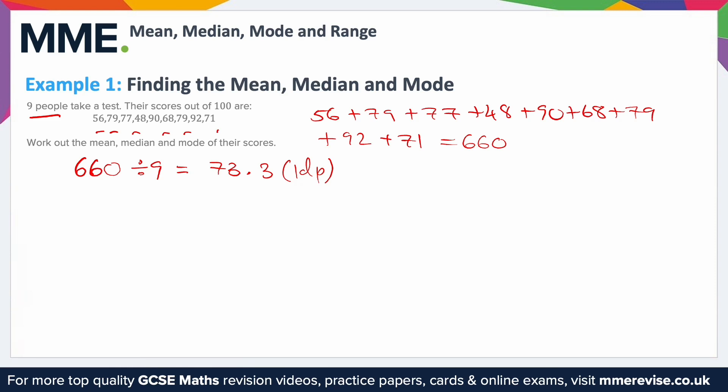So the average score — the mean score in the test — was 73.3 out of 100. Next, the median.